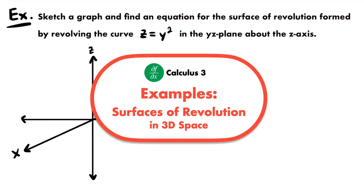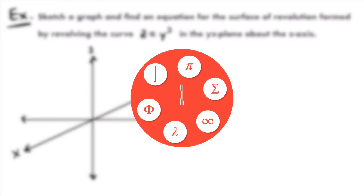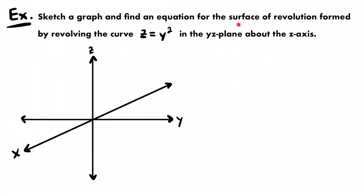Welcome back. Let's practice working with surfaces of revolution in 3D space. Here's our first example: we want to sketch a graph and find an equation for the surface of revolution formed by revolving the curve z equals y squared in the yz-plane about the z-axis.